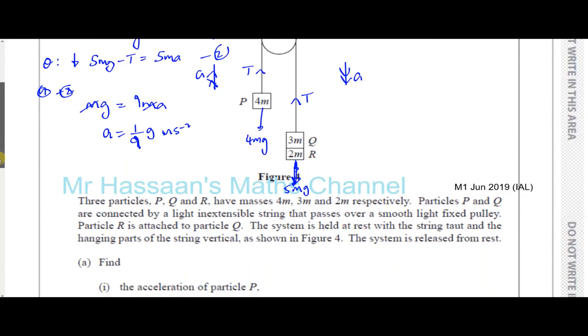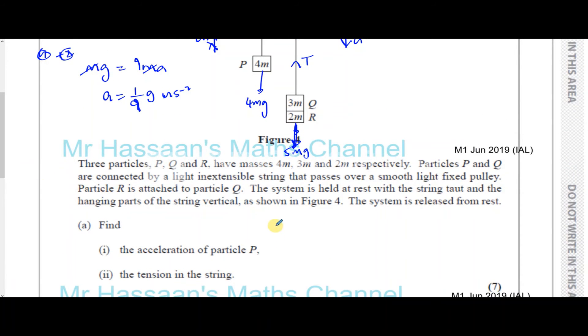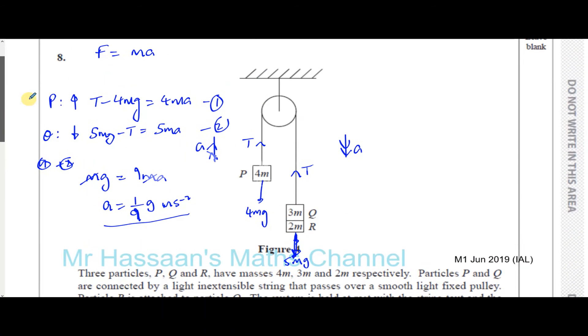Then it says the tension in the string. I'm doing my work up here so we can see the diagram. Now the tension in the string can be found now because we know what A is. So we can, for example, use equation 1. If we take equation 1 and we know A equals 1 ninth of G, we can say T is going to be 4Ma, so 4M times 1 ninth of G, plus 4Mg. Just rearranging that equation. So the tension is 4 over 9Mg plus 4Mg.